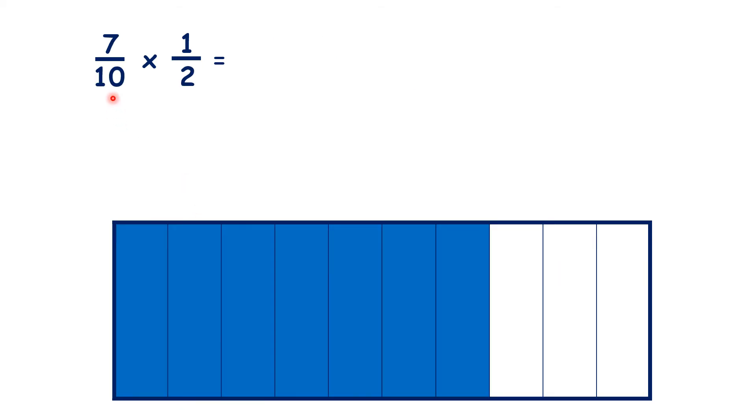So what is 7 tenths times 1 half? We're multiplying our numerators, then multiplying our denominators, so we have 7 20ths.